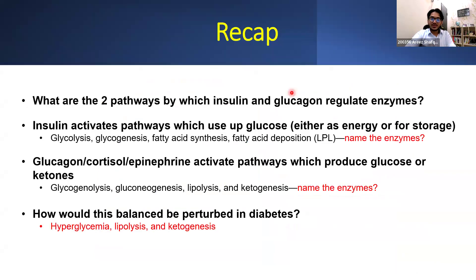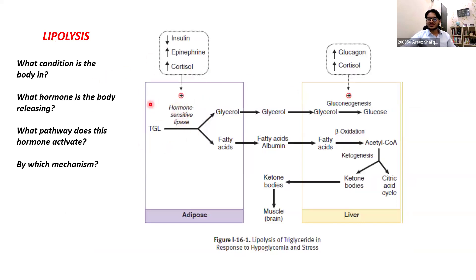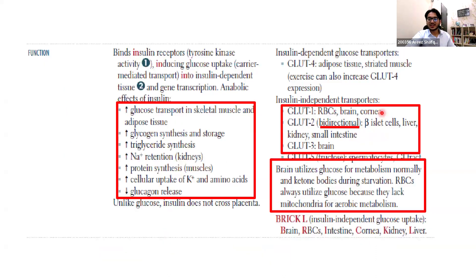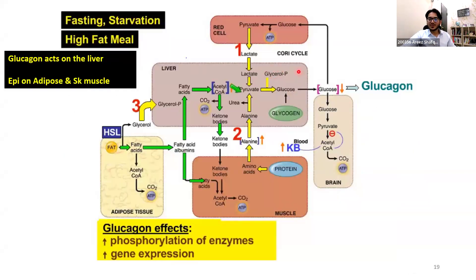Going back to lipolysis: in fasting conditions, triglycerides are broken down to fatty acids for beta-oxidation to fuel gluconeogenesis. At the same time, the glycerol you're producing is getting made into glucose — that's the third source of gluconeogenesis. Fatty acids get bound to albumin and go into the muscle for beta-oxidation to be used as ATP, or a fuel. Also, fatty acids go to the liver to produce acetyl-CoA, which is burned in the Krebs cycle to produce ATP, which fuels gluconeogenesis. The glycerol generated from lipolysis is used as a glucogenic substrate to make glucose.